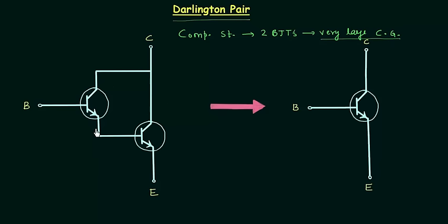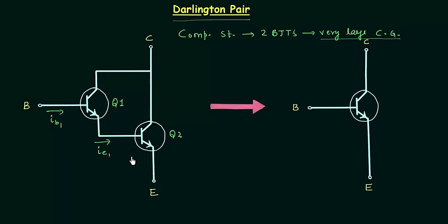You can see the construction of the Darlington pair. The connection is made in such a way that the current amplified by the first transistor is further amplified by the second one. The first transistor is Q1 and the second transistor is Q2. The input current IB1 is amplified by Q1 and the output current is IE1. This output current is further amplified by Q2, and the output current of the second transistor is IE2.